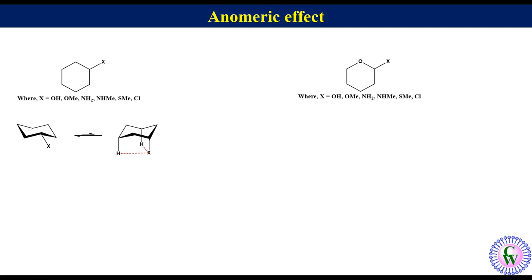In tetrahydropyrone, the carbon adjacent to the ring oxygen is called the enumeric carbon. In contrast to monosubstituted cyclohexane, in the case of tetrahydropyrone bearing an electronegative substituent at position 2, the substituent prefers the axial position.